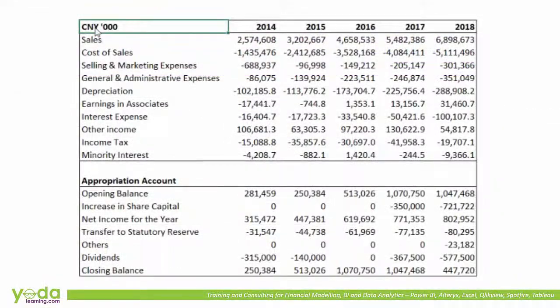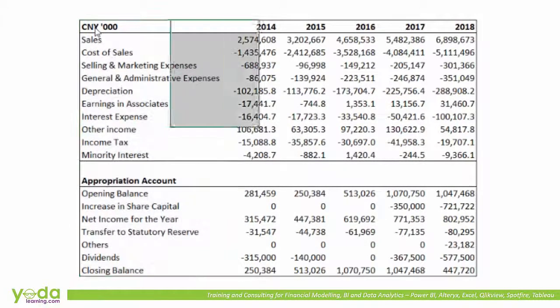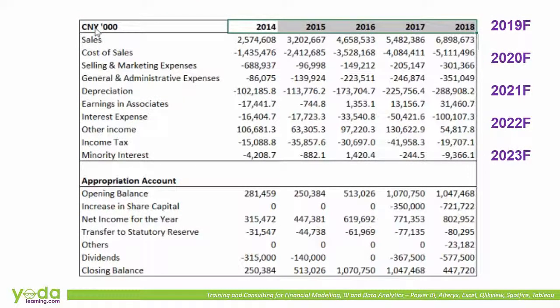We begin by having a quick glance at the raw data in front of us. We have the line items of the income statement along with the retained earnings, also known as the appropriation account. The period is 5 years, and we will also be forecasting for the next 5 years, as that is a suitable timeframe for both our forecast and valuation.